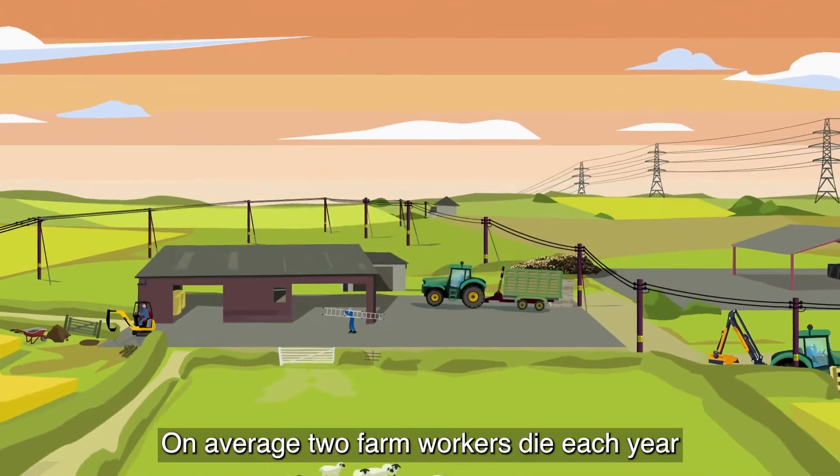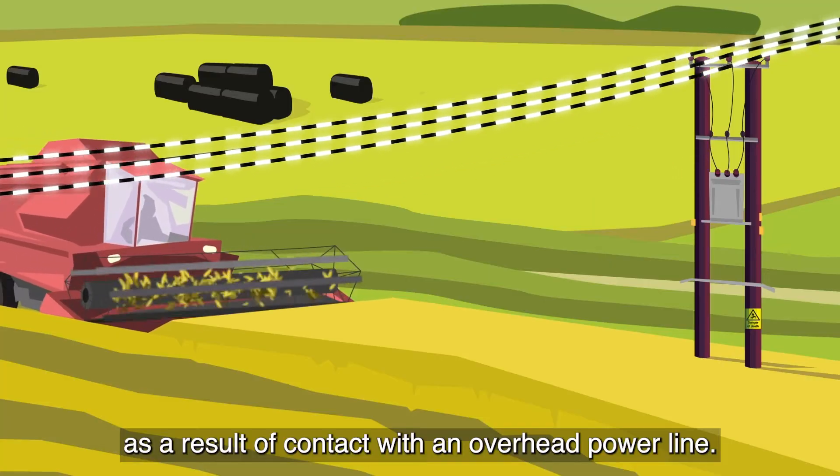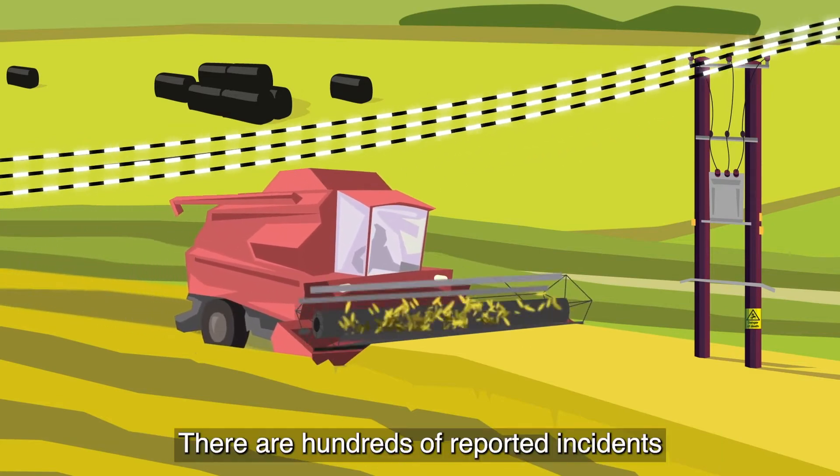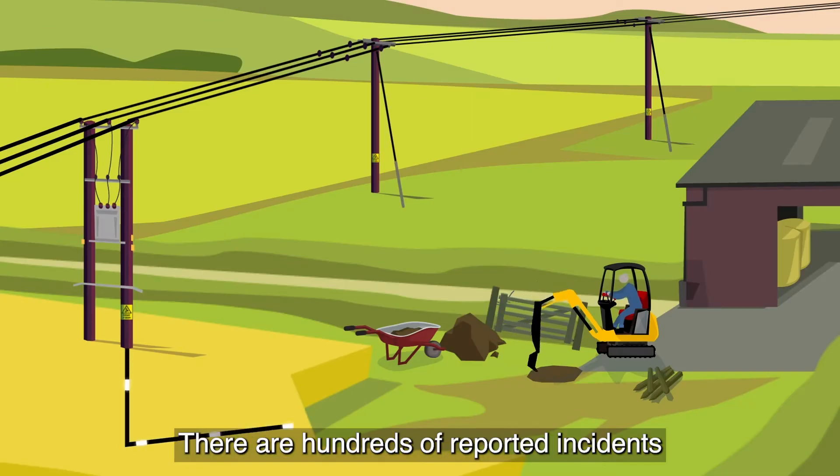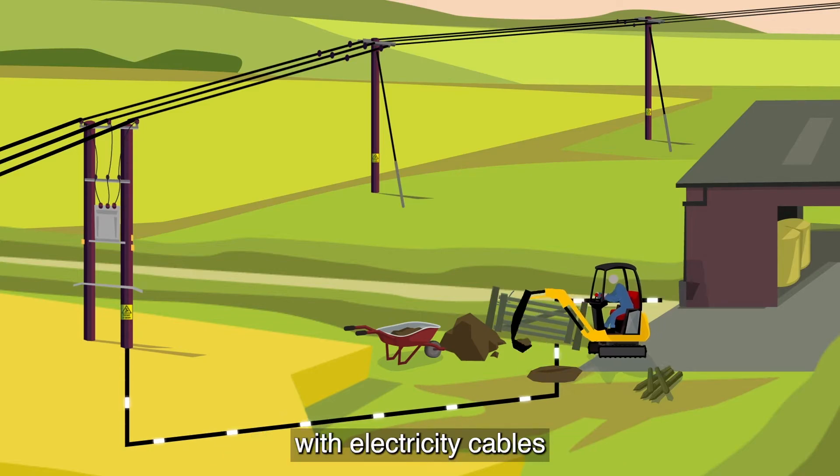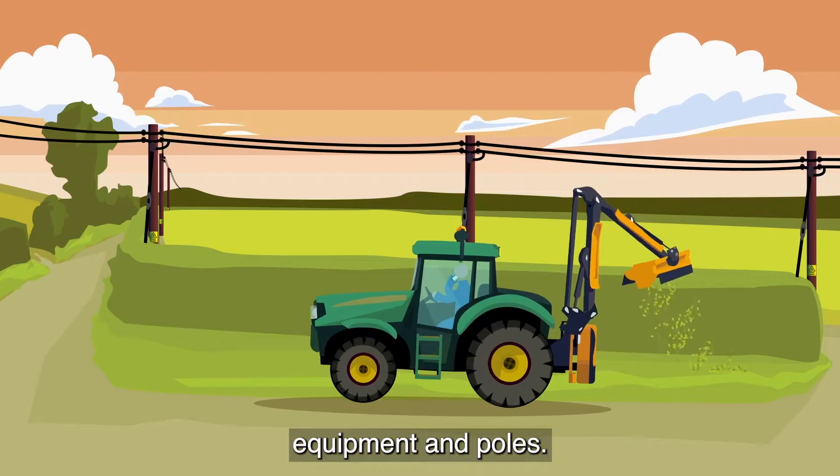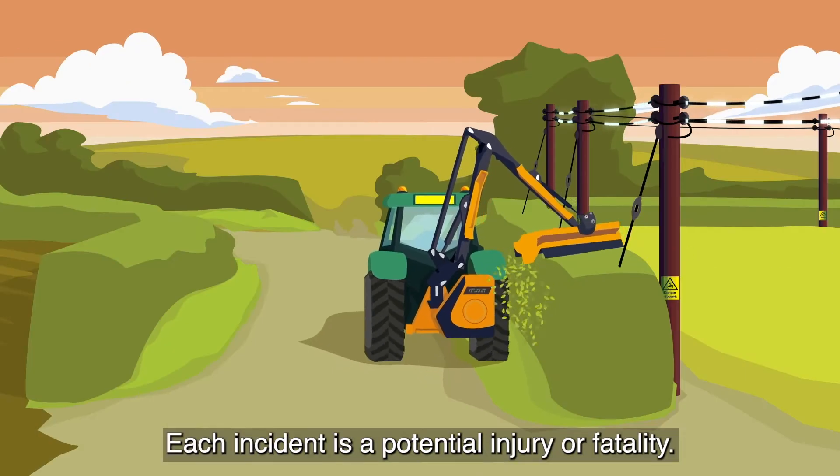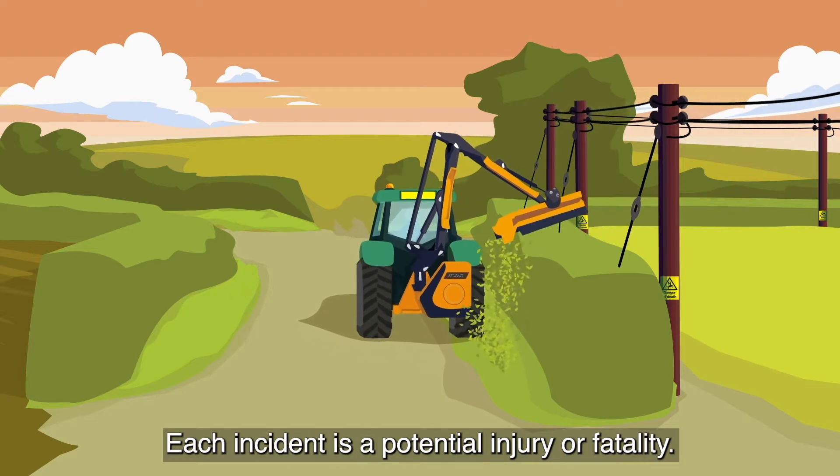On average, two farm workers die each year as a result of contact with an overhead power line. There are hundreds of reported incidents where farm machinery make contact with electricity cables, equipment, and poles. Each incident is a potential injury or fatality.